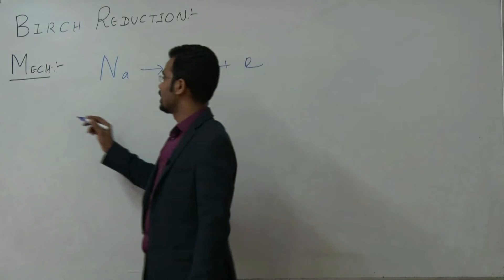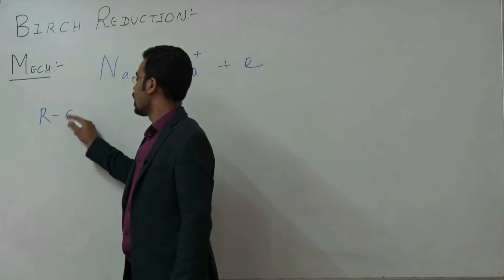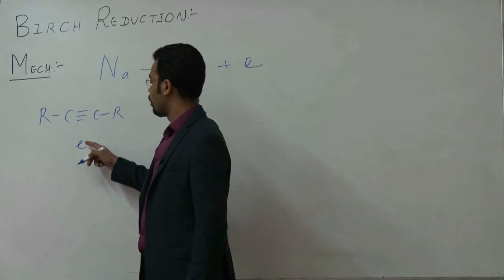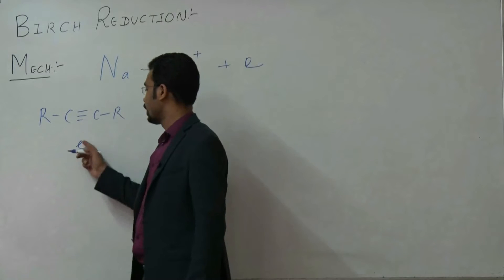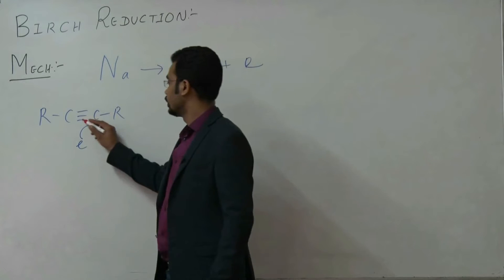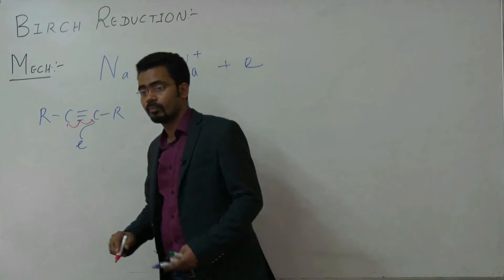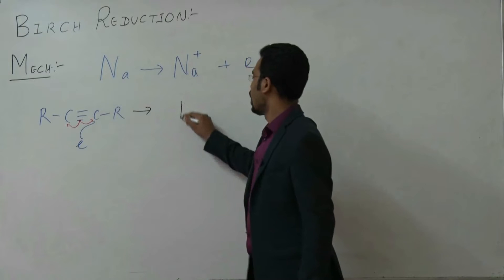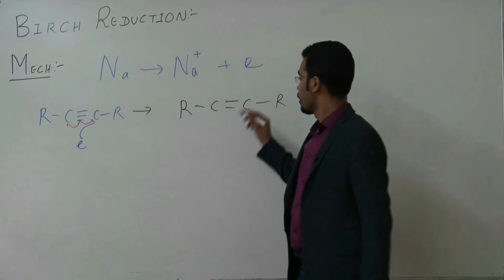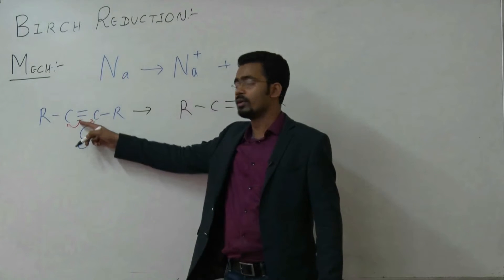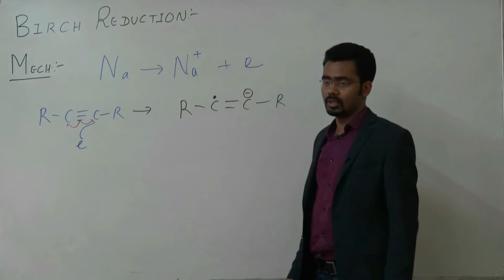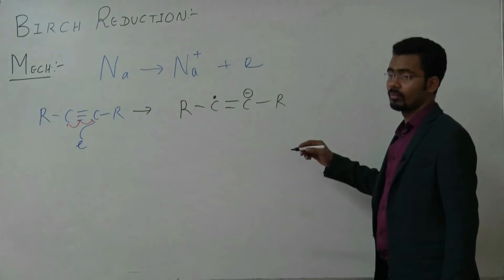If we assume R-C≡C-R, then bombardment of electron occurs on this pi bond. If there is a collision between this bond and the electron, this electron will go in two directions — one electron from the bond and one from the outer source — so it has a minus charge and a free radical.